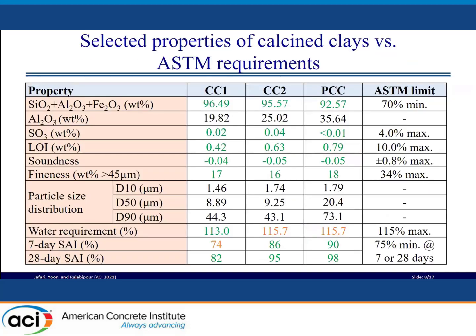Here are the physical and chemical properties of the three calcined clays. It can be seen that all three could meet the ASTM limits, except for a slightly higher water requirement for CC2 and PCC, and a slightly lower strength activity index at 7 days for CC1. Also, the alumina content — which is a good indication of clay content — and strength activity index are higher in PCC compared to the other calcined clays, showing the highest reactivity in PCC.